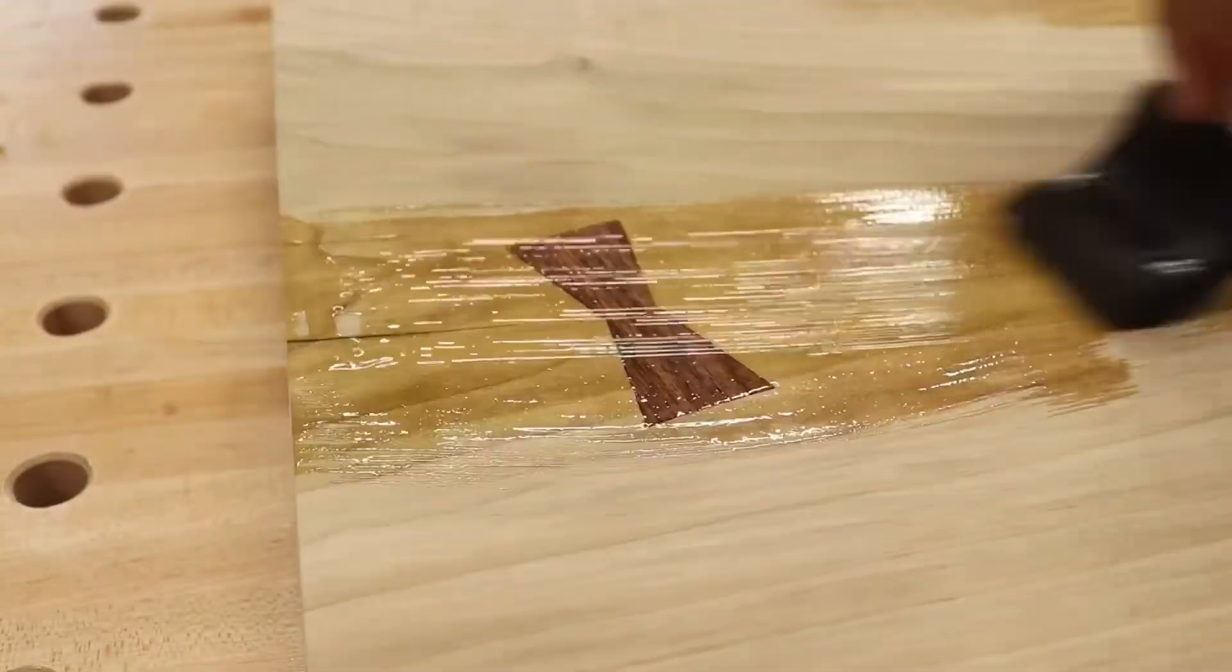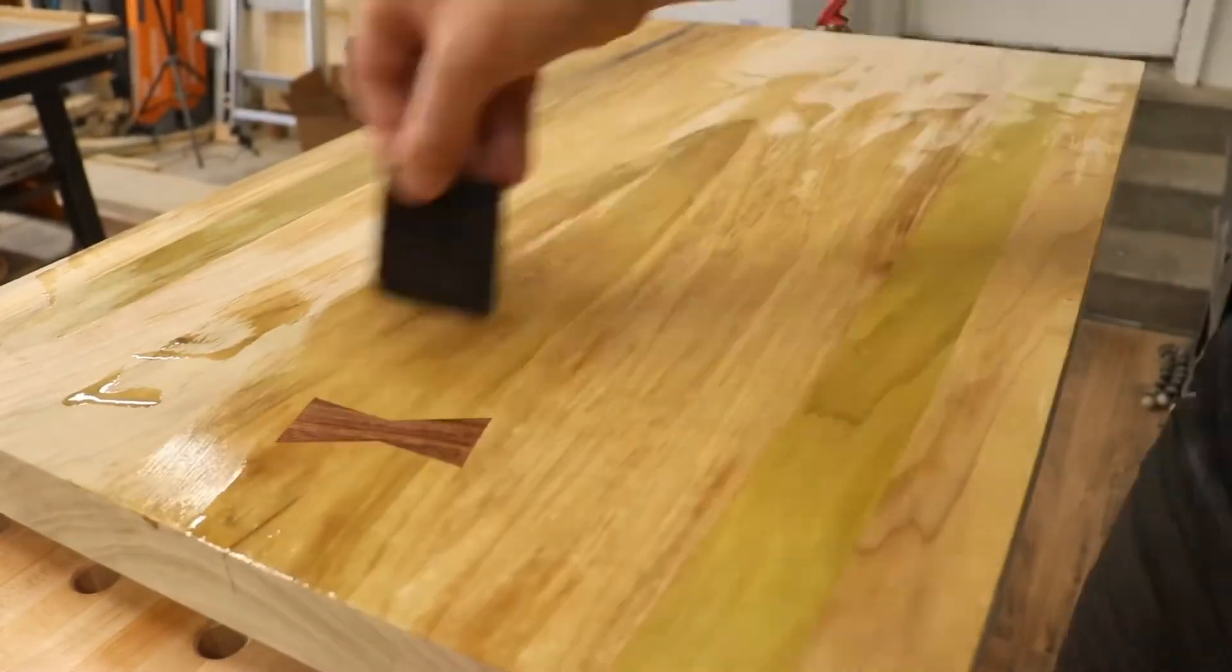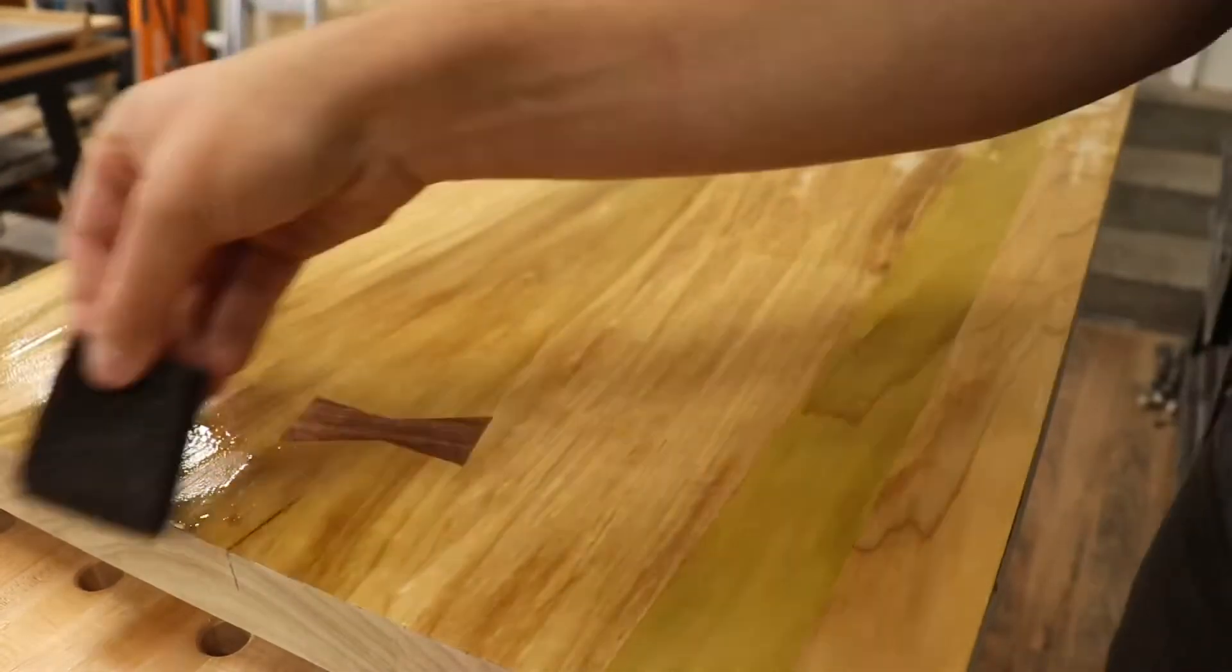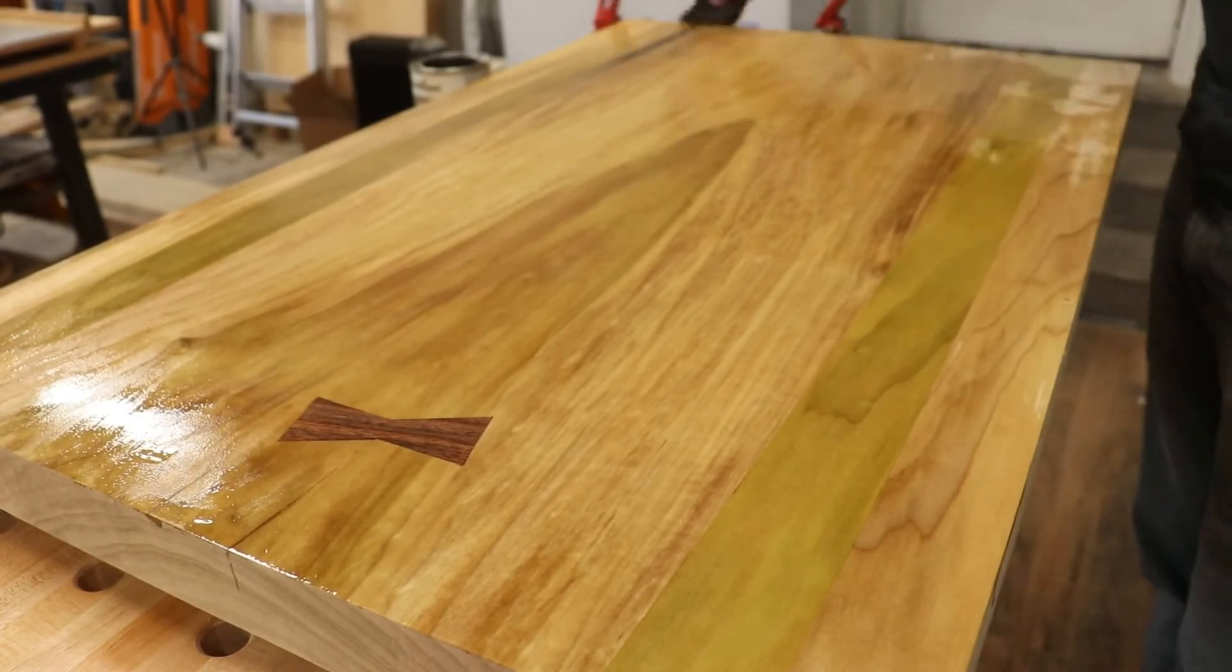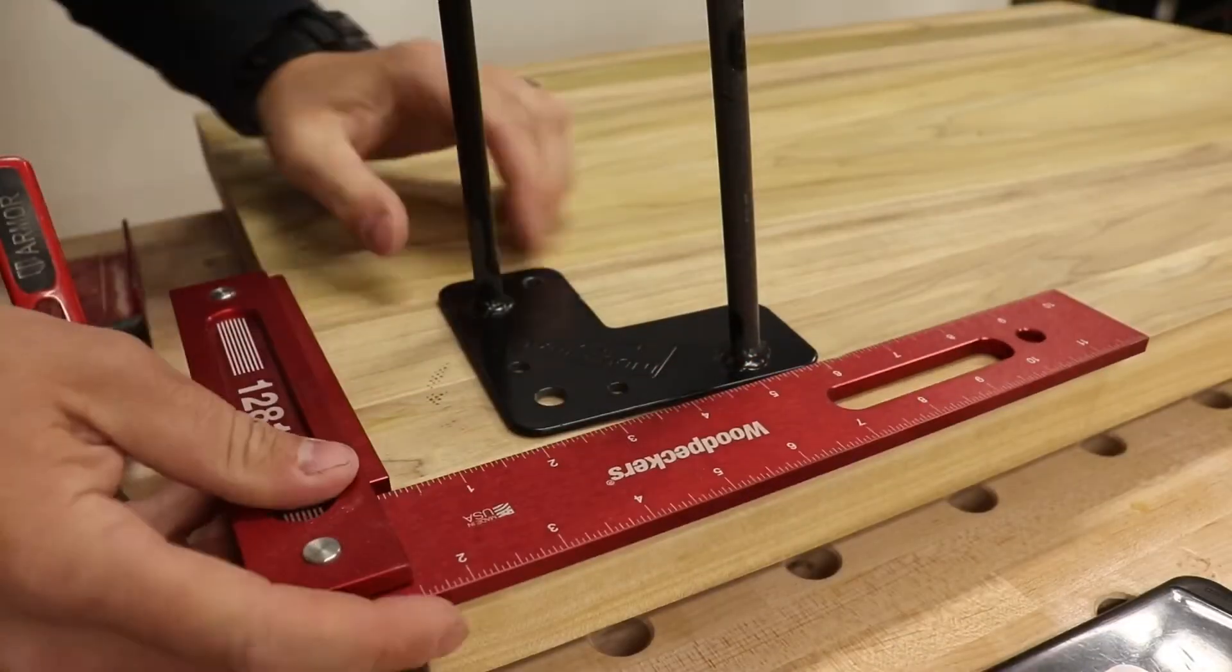Now I'm just using a Varathane oil poly for the finish. I actually like General Finishes Arm-R-Seal more, but I didn't have any left so I just used a poly.